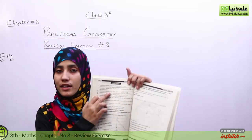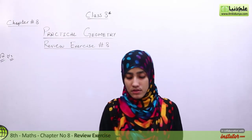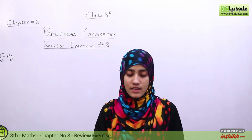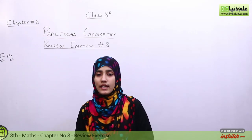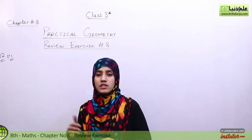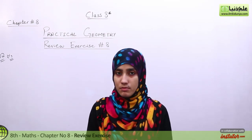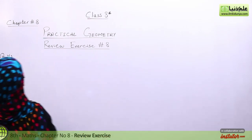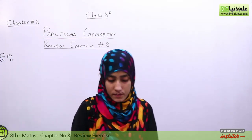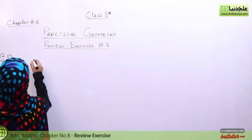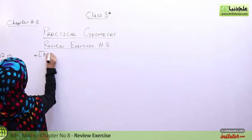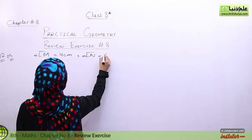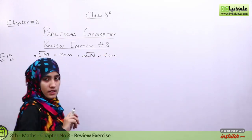Here in Part 6 you have rectangle ABCD variables, and there you have to construct a rectangle with LMNO names. What is given? LM equals 4 cm. Second, LN equals 6 cm.